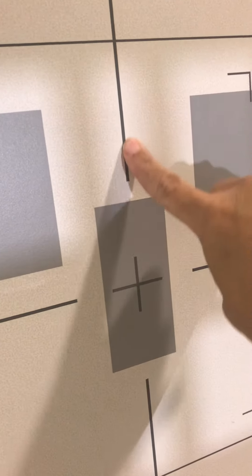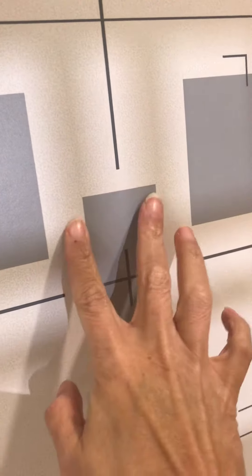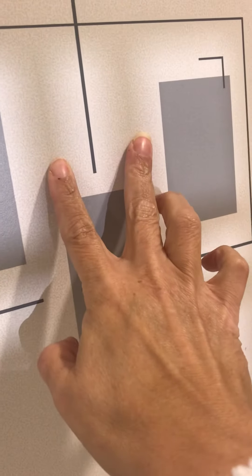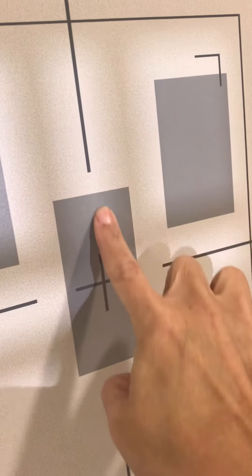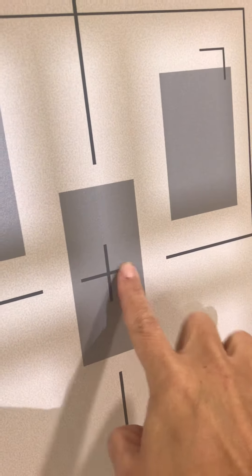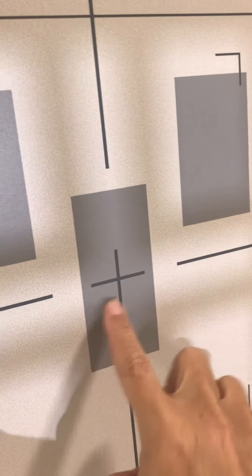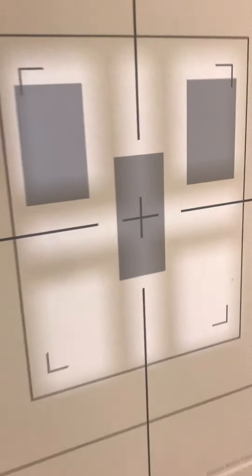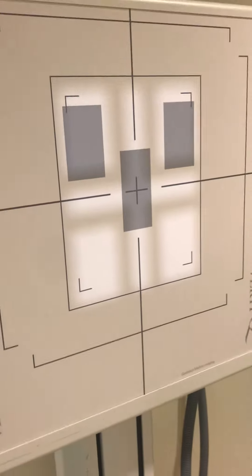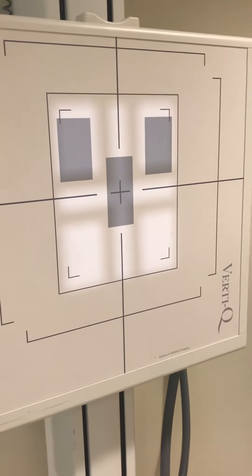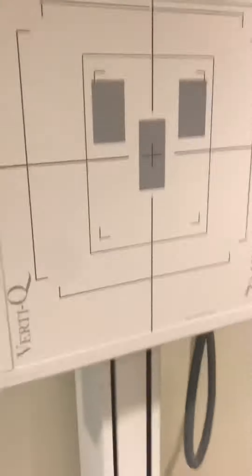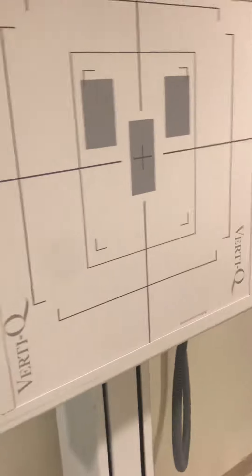I think of these black lines as a car driving down the road — there are the two sides of the road, the car driving down, and the intersection. That's where the center ray is going to be. That's how you work the wall bucky with the x-ray tube.